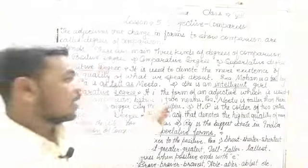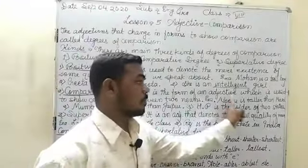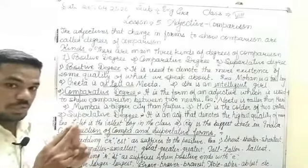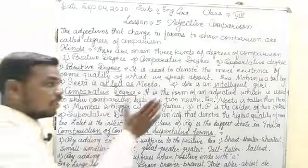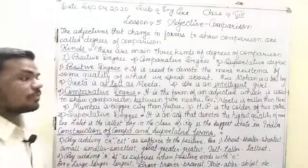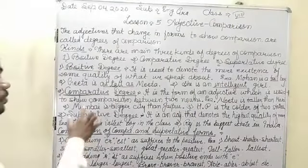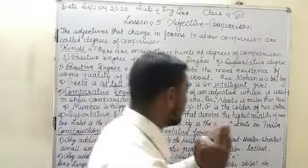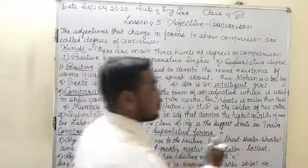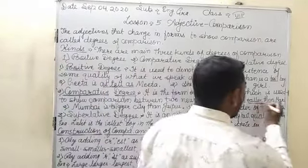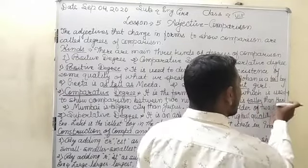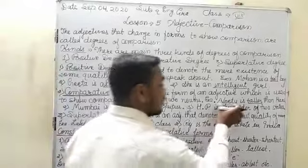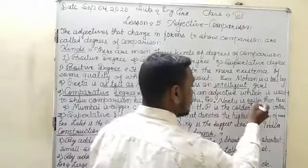Second is comparative degree. It is the form of an adjective used to show comparison between two nouns. In comparative degree we especially compare two things — for example, 'Nitu is taller than Hari,' meaning Nitu is taller than Hari and Hari is not as tall as Nitu.